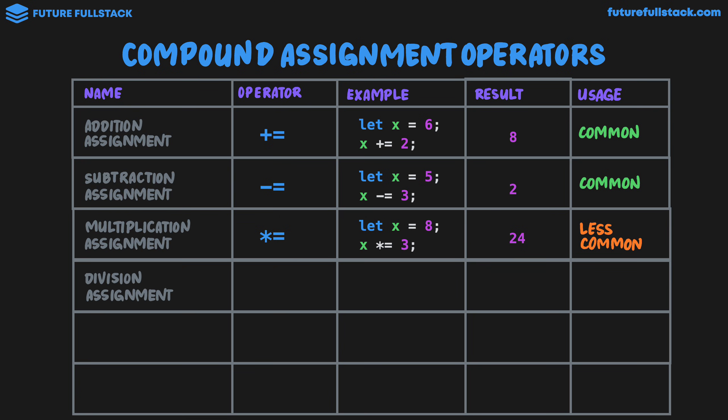For division assignment, we have divide equals or forward slash equals. Looking at an example, we have let x equals 10. x divide equals 5 would change the value of x to 2. That is 10 divide 5. And again, this is less commonly used.